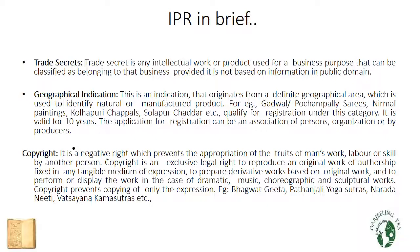GI — Geographical Indication: this is an indication that originates from a definite geographical area, used to identify natural or manufactured products. Examples include Pochampalli Sarees, Nirmal Paintings, Kolhapuri Chappals, Solapur Chadder, etc. These qualify for registration under this category. It is valid for 10 years, and the application for registration can be made by an association of persons, organizations, or by producers.